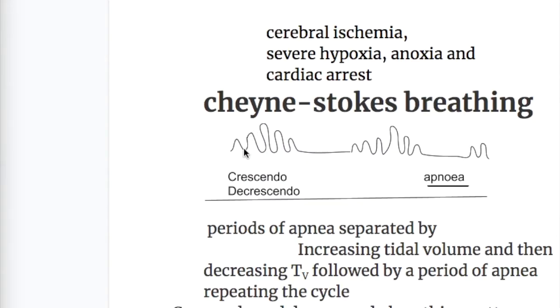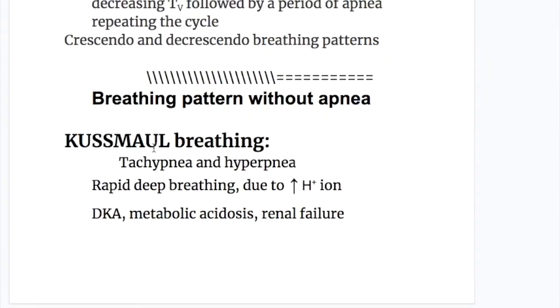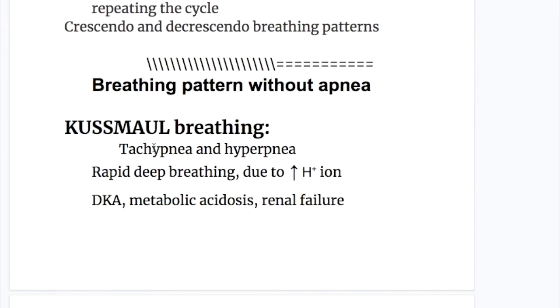Cheyne-Stokes breathing shows crescendo and decrescendo tidal volume — increasing breathing then decreasing — followed by a period of apnea, repeating the cycle.